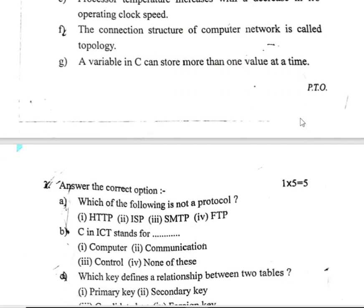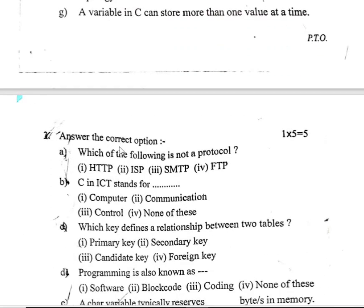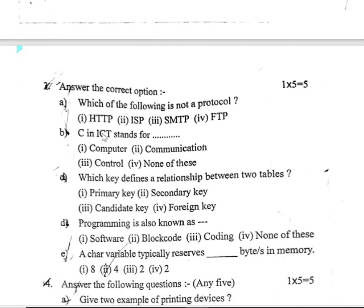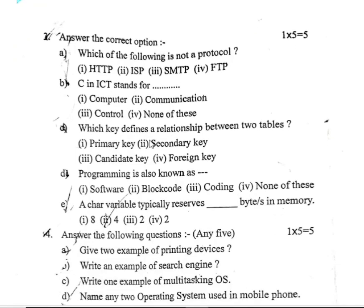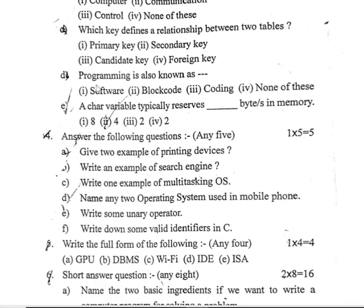Next section: Answer the correct option, questions one to five marks. Which of the following is not a protocol? Next: In ICT, what does a certain standard stand for? Which key defines a relationship between two tables? Programming is also known as dash. Four options are given and only one option is correct.